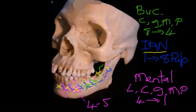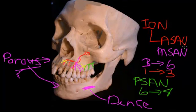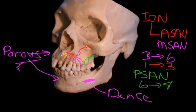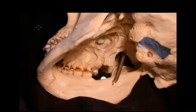So this covers the key buccal surface nerve supplies for the lower jaw, and we also looked at the upper jaw. Now I want to move on and look at the key nerves from the lingual surface. Just to give you some orientation, the palate is in here and the mandible is here.